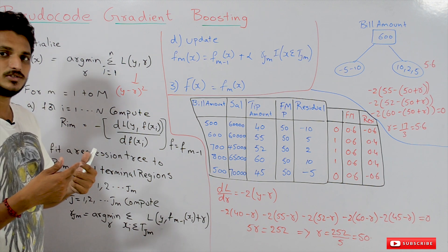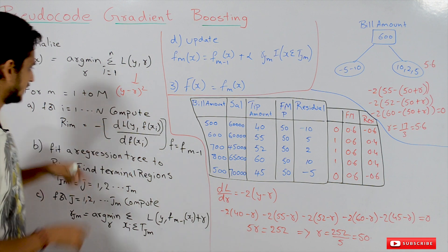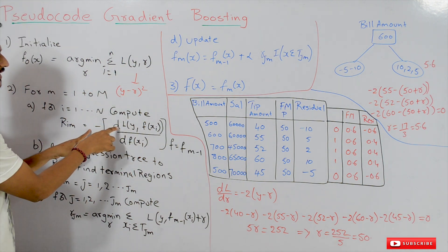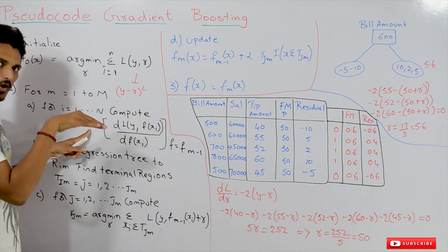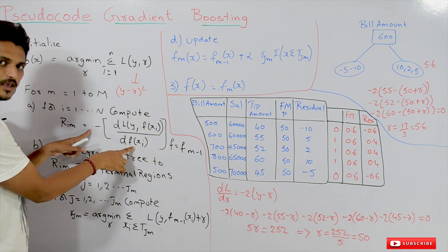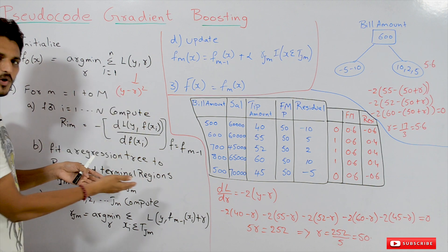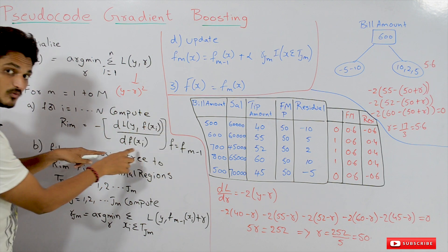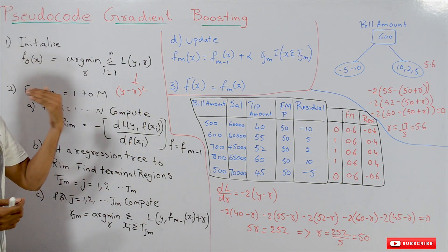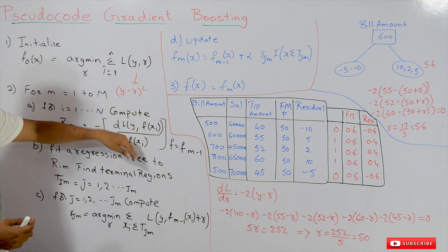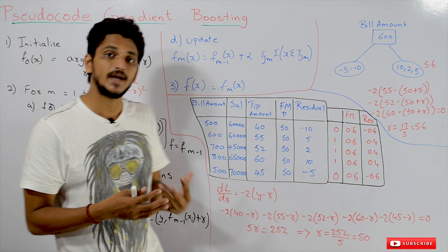Instead of a simple residual, we calculate a pseudo-residual, as discussed in the previous class. The pseudo-residual is the negative of the derivative of the loss function with respect to the prediction f(x_i). Here f(x_i) refers to the prediction from the (m−1)-th model, so for the first model we use the zeroth model's predictions.